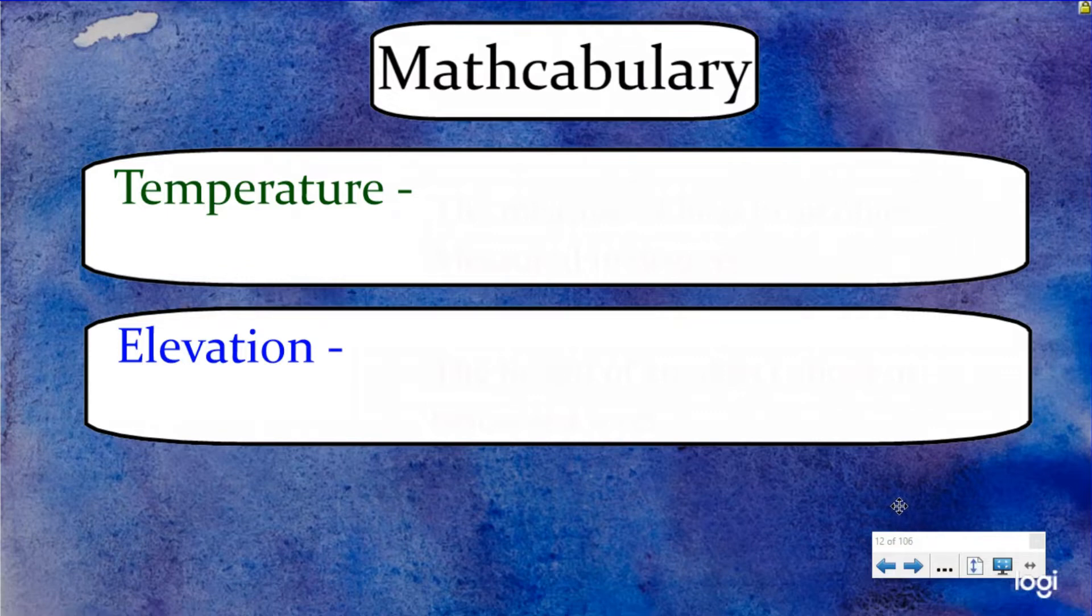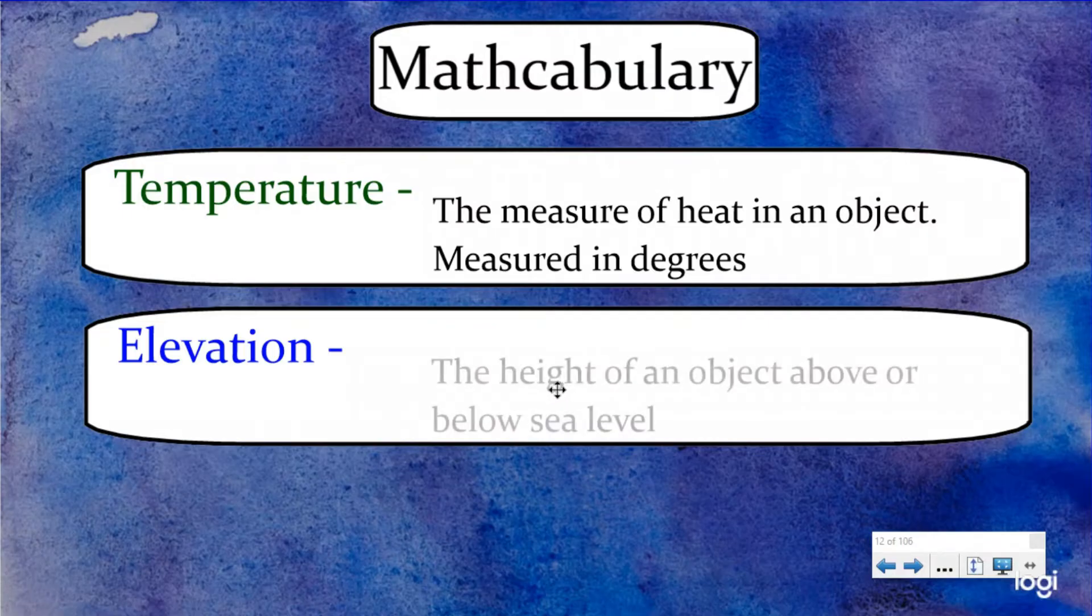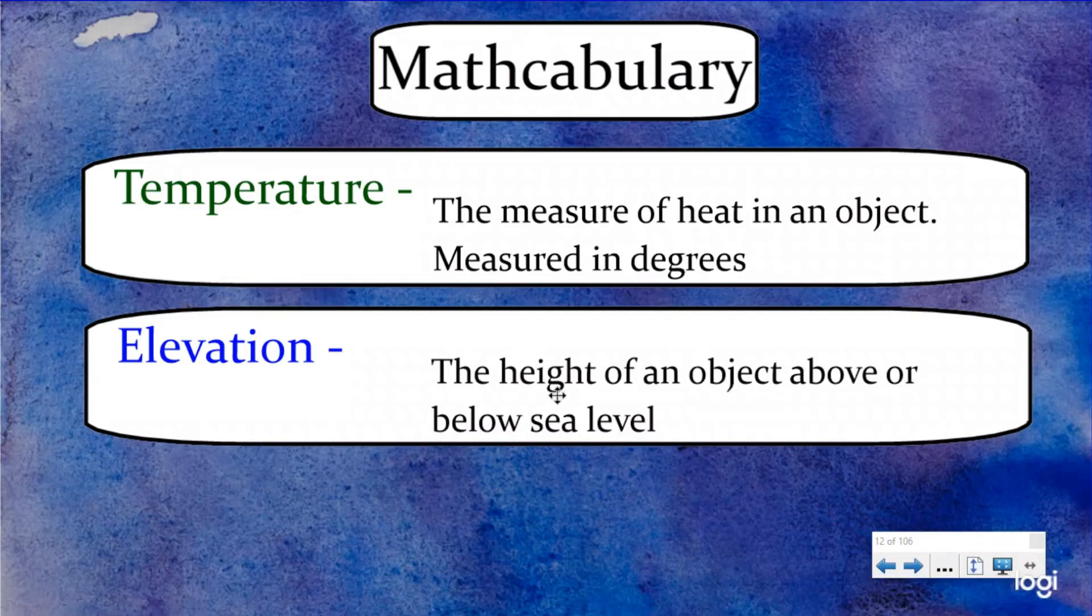Today we're talking about temperature and elevation. Now most of you know what temperature is. Temperature is the measure of heat in an object and it's measured in degrees. That's a non-scientific definition of that word, but it will work for us. And elevation, elevation is the height of an object above or below sea level. And we'll look at that in just a second, but let's start with temperature.